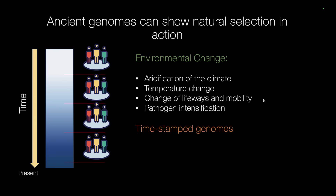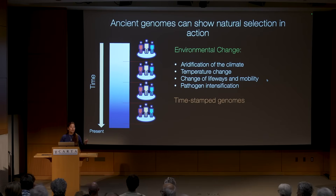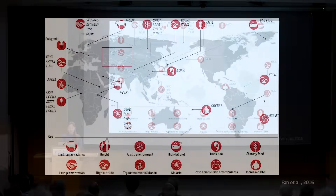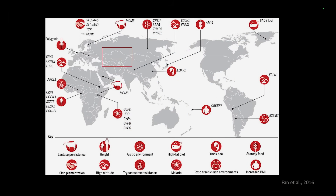At different time points, different pathogens arise and intensify during our evolutionary history. By using these time-stamped genomes, we can track various genes and variants and how they change through time. In our understanding of natural selection, the Central Asian region also remains understudied. Here is a map of various studies that have looked at selection globally, identifying genes and pathways under selection for height, skin color, high-altitude adaptation, disease adaptation, and other environmental and cultural factors.